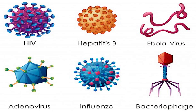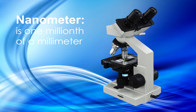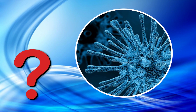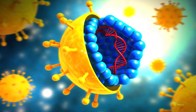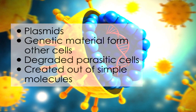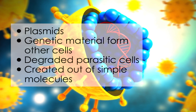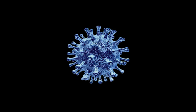Viruses are such simple organisms, made up of a few molecules that are tiny in size — a few nanometers; a nanometer is one millionth of a millimeter — so they cannot be seen with light microscopes. It is not known for sure when viruses appeared. It is believed they possibly formed from plasmids or protein molecules, from remnants of genetic material from other cells, or that they were the result of parasitic cells that degraded to become viruses. There is even the theory that they were created from simple molecules, in which case they would be the first organisms capable of replicating themselves.